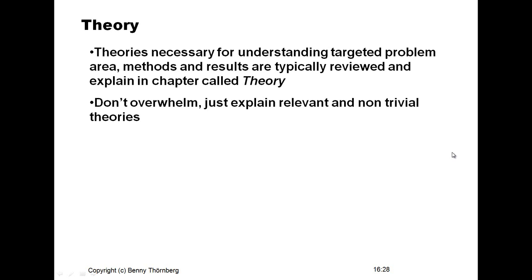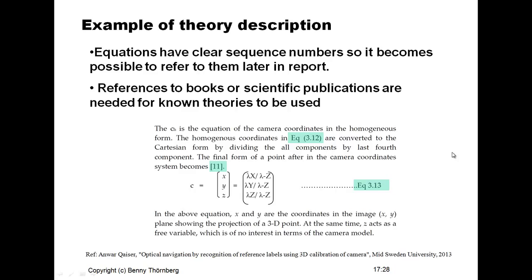Here is an example from another master student I supervised, Anwar Kaiser. An equation should always be given a corresponding equation number so you can refer to it in the following text. He has also correctly referred to scientific publication number 11 in the reference list — the publication where he found this equation.